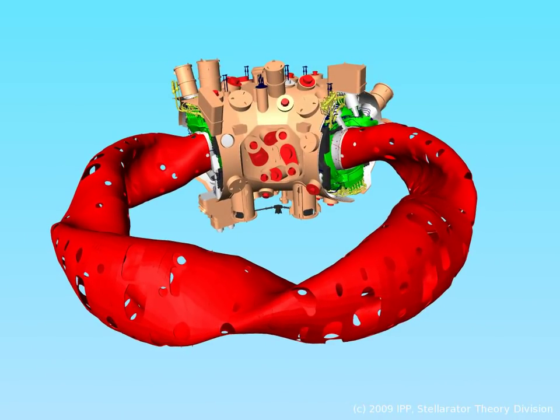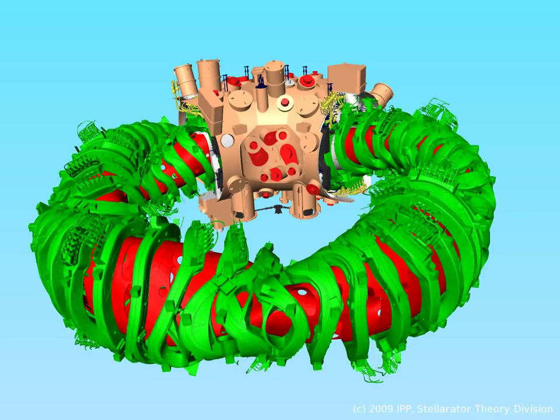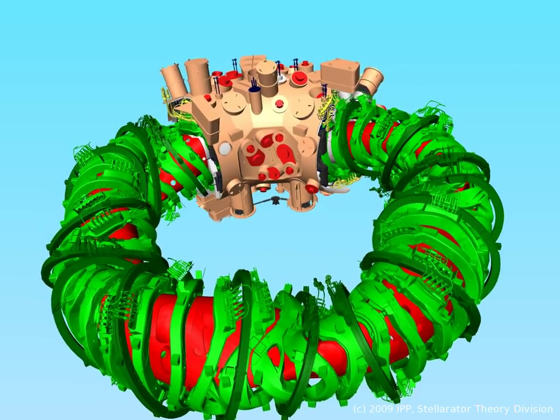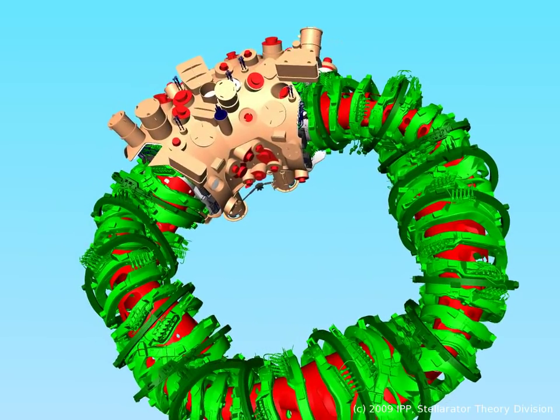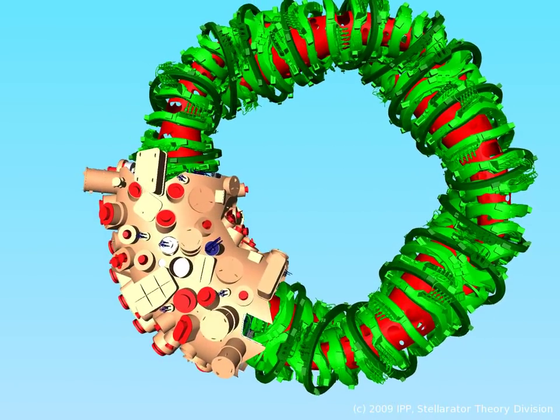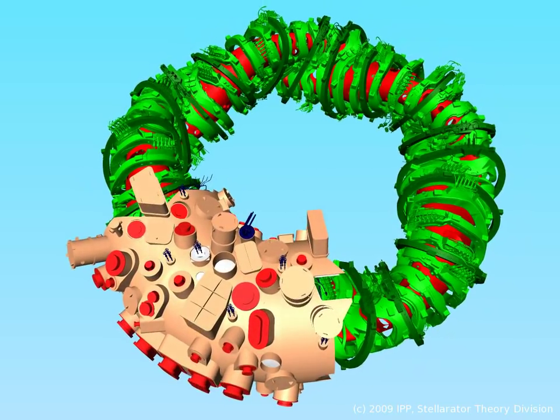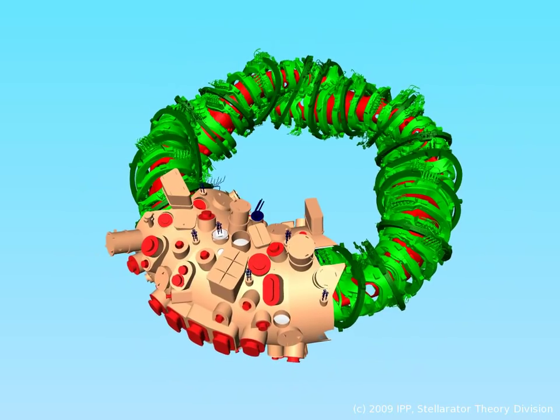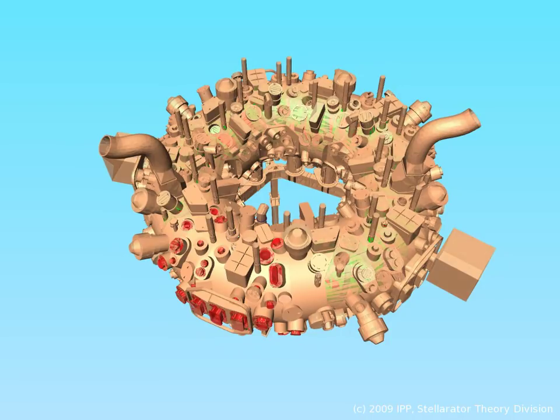Here, once again, the entire coil system is depicted, with its periodicity of five especially obvious when viewed from above. Enclosed in its outer vessel, the stellarator now bears some resemblance to a fictional spacecraft.